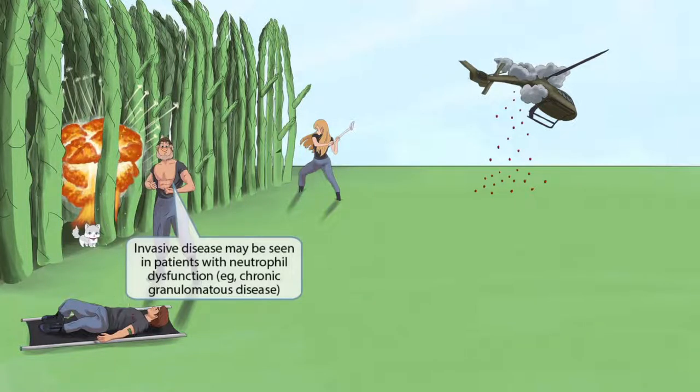This commando grandpa was nearby and is saving the injured soldier's life. Despite being old, he's pretty shredded and is bursting open his shirt to tear off clothing to use as a tourniquet. The grannies are a symbol for granulomas, so we use a variation — a grandpa — to represent chronic granulomatous disease. The idea of bursting his shirt should make you think of the respiratory burst, which is impaired in chronic granulomatous disease. Together, these ideas help you remember that invasive disease may be seen in patients with neutrophil dysfunction, such as those with chronic granulomatous disease.